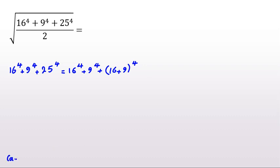And we have a famous identity that a plus b to the 4 is a to the 4 by binomial theorem. 4a cubed b plus 6a squared b squared plus 4ab cubed plus b to the 4. It will be 16 to the 4 plus 9 to the 4 plus 16 to the 4 if we apply this.